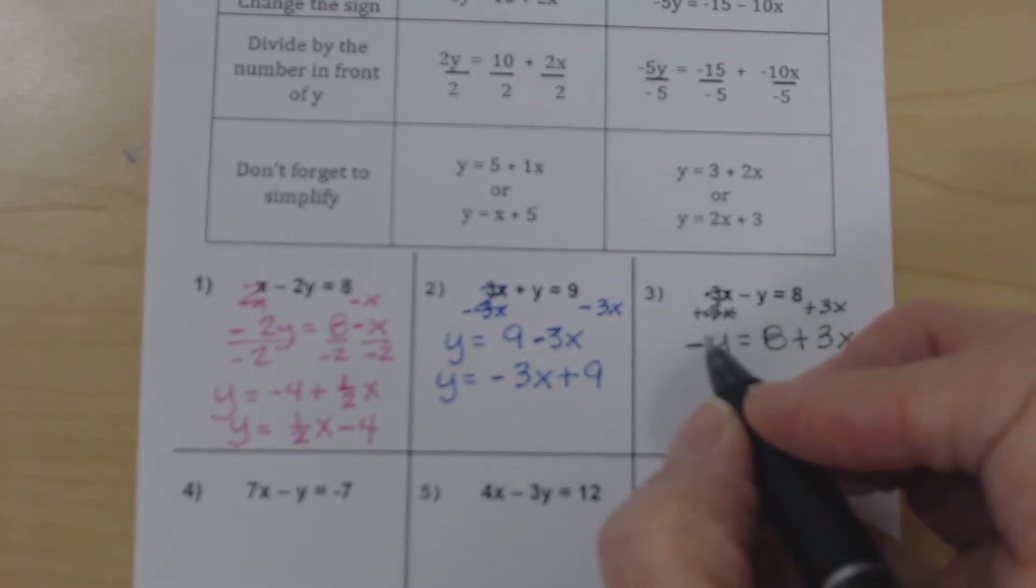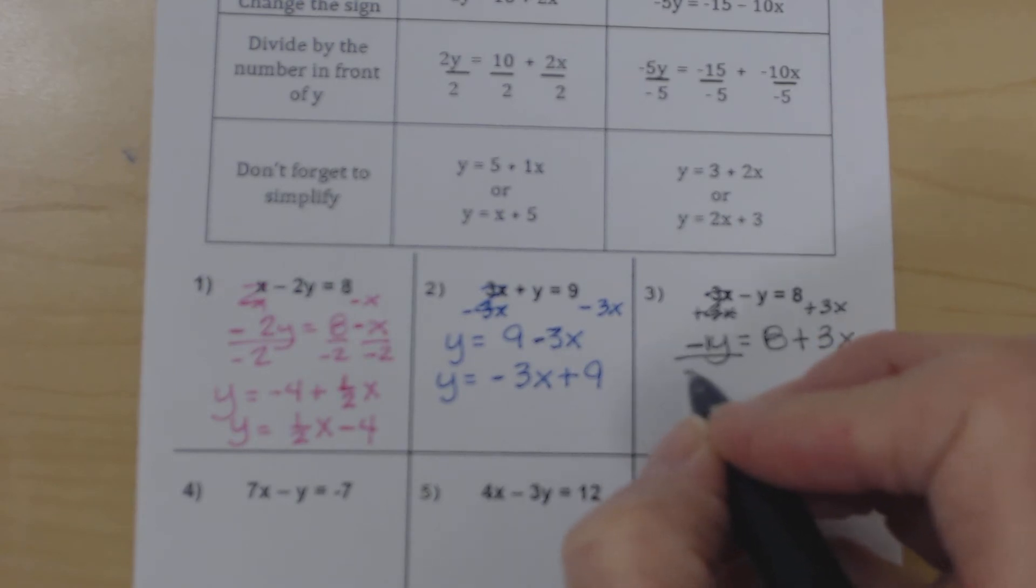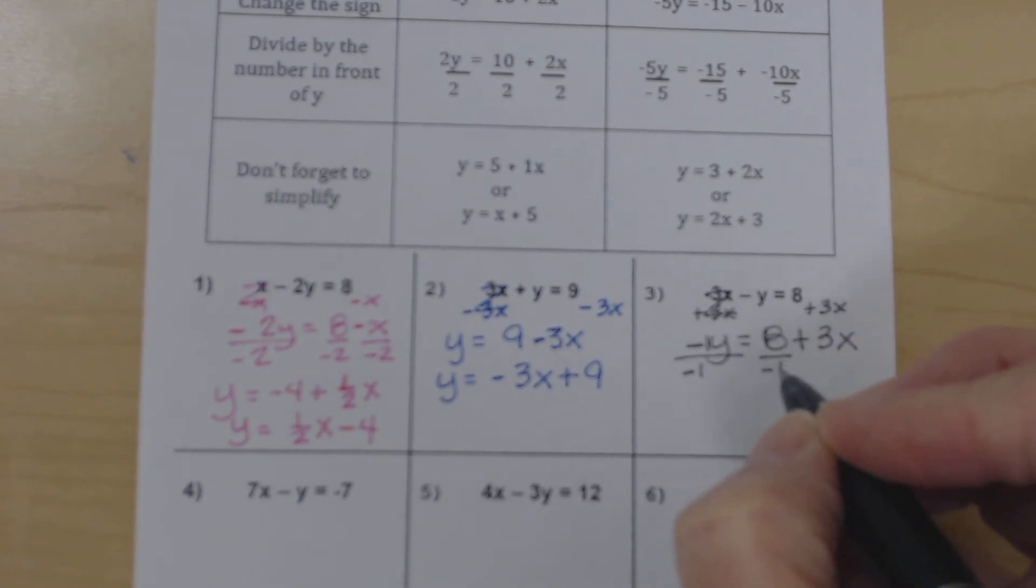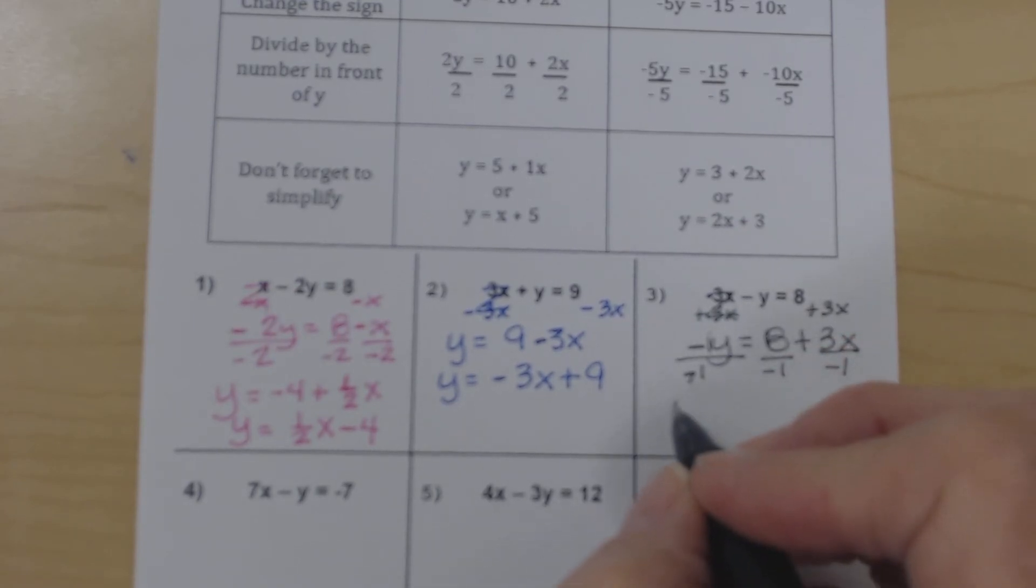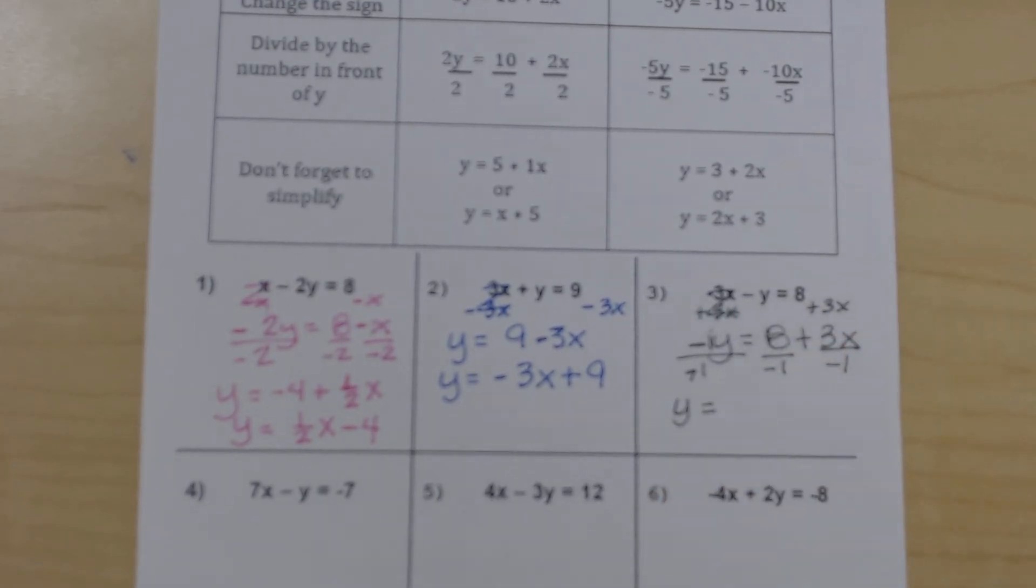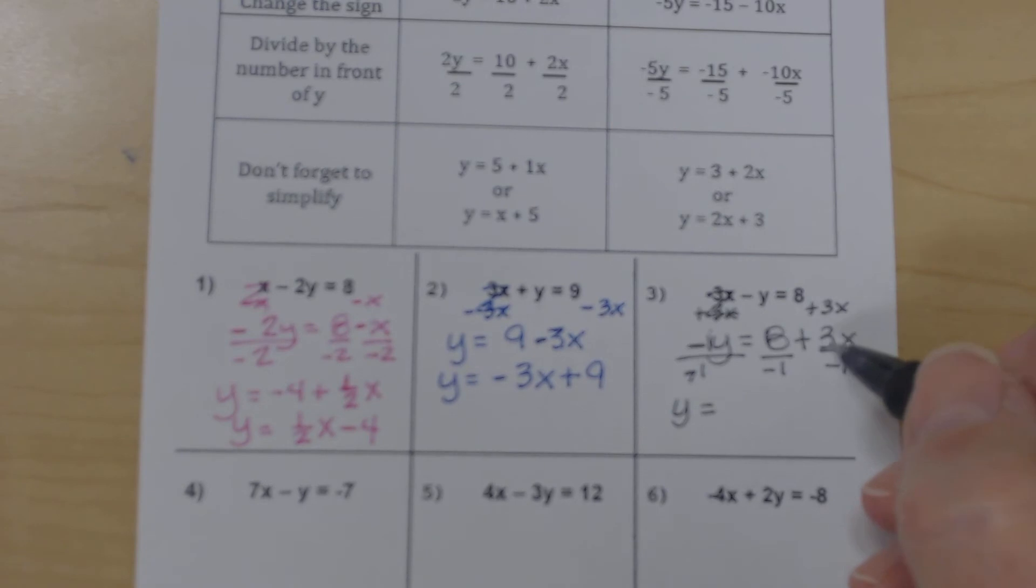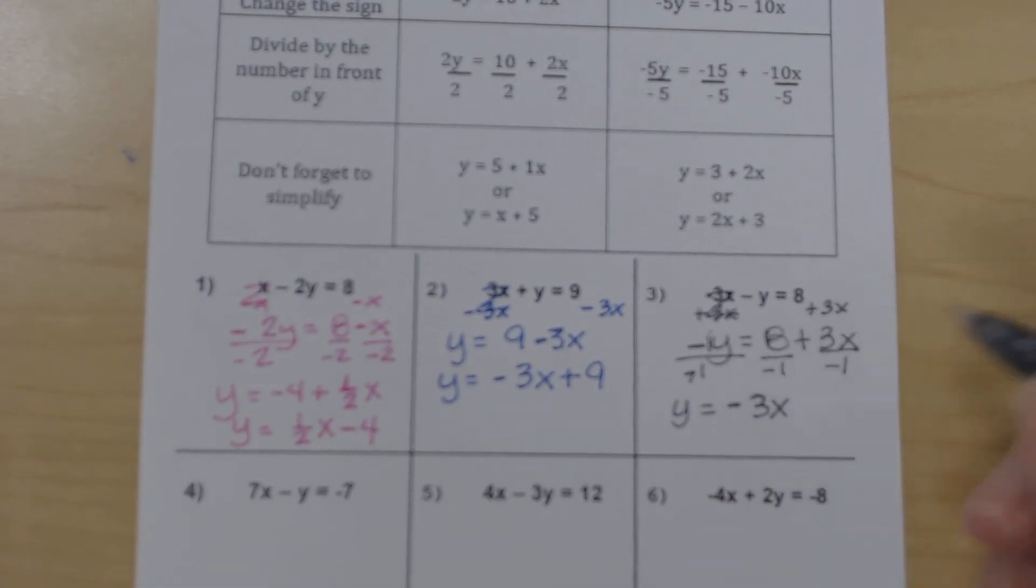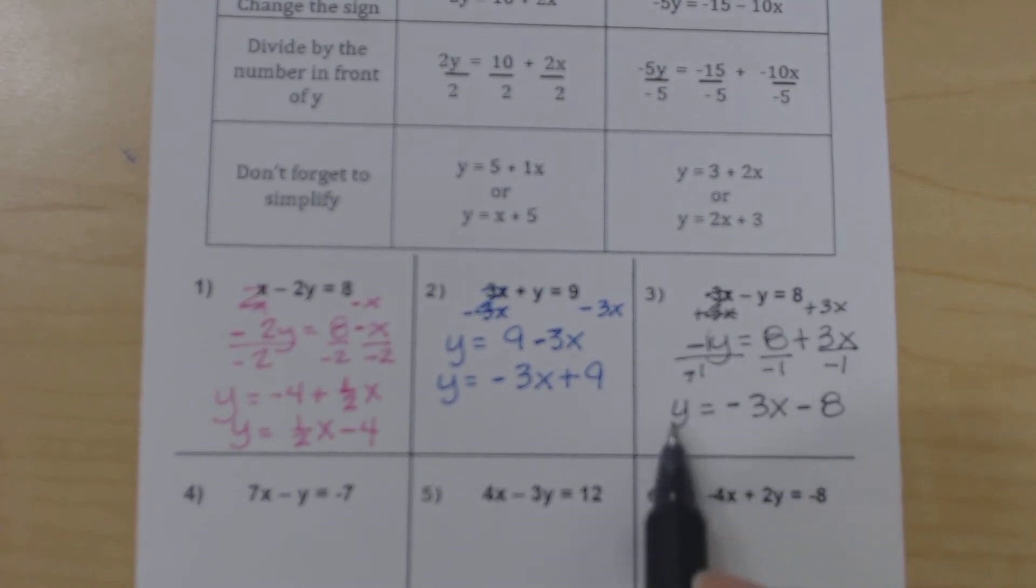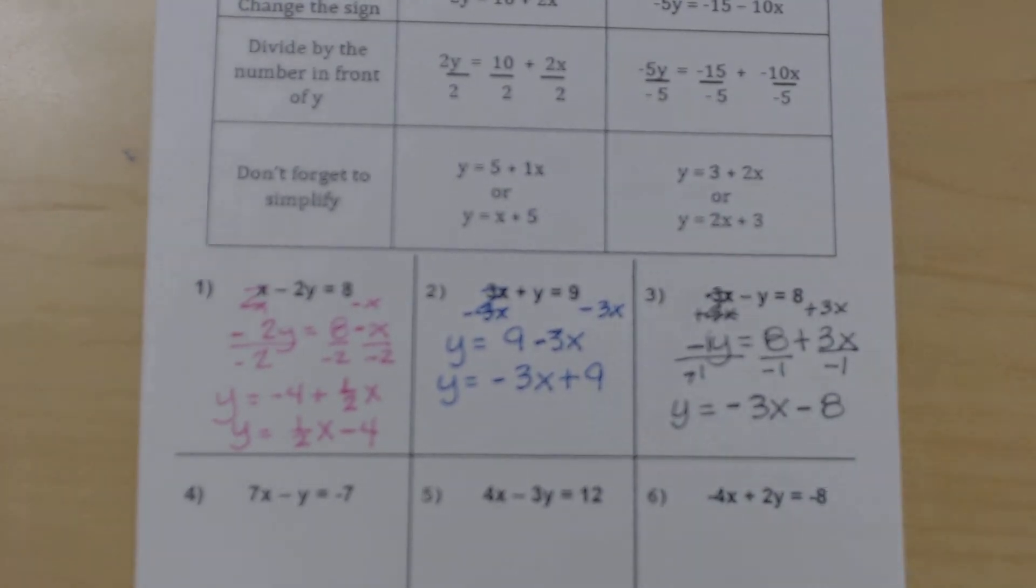Now there's that negative 1, remember, that's in front of the y. So we're going to divide every term on both sides by negative 1. These cancel out. We're left with y equals. I'm going to go ahead and do my x term first. Positive 3 divided by negative 1 is negative 3. And 8 divided by negative 1 is negative 8. So in slope-intercept form is y equals negative 3x minus 8.